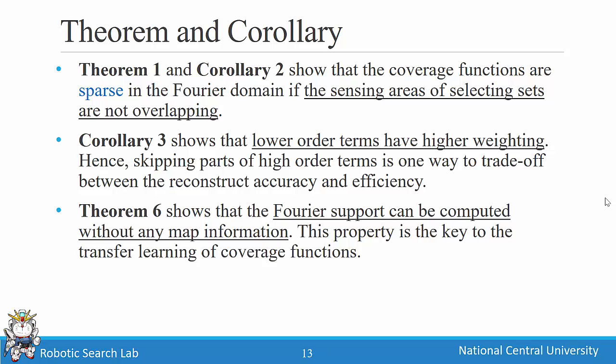To summarize the theory: Theorem 1 and Corollary 2 show that a coverage function will be sparse when there is no sensing overlap between sets. Corollary 3 shows that lower-order terms have higher weighting, so when dropping coefficients one should drop high-frequency, high-order terms first. Theorem 6 shows that the Fourier support can be computed without any map information — using only the empty map — which enables transfer learning.